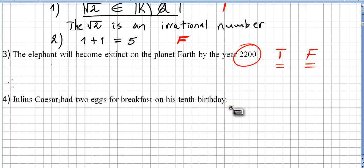Now, we have a different case. What about this sentence? Julius Caesar had two eggs for breakfast on his 10th birthday. Is this a proposition? Well, yes, this is a proposition. But this statement does not have a truth value. But it is still a proposition. So, no truth value, but still a proposition.